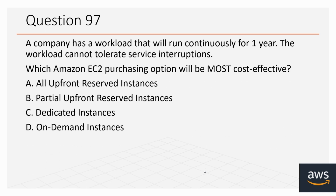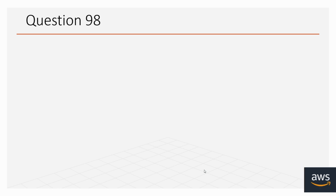Question number 97: A company has a workload that will run continuously for one year. The workload cannot tolerate service interruptions. Which Amazon EC2 purchasing option will be most cost effective? Options: A. All Upfront Reserved Instances, B. Partial Upfront Reserved Instances, C. Dedicated Instances, D. On-Demand Instances. The correct option is A, All Upfront Reserved Instances.